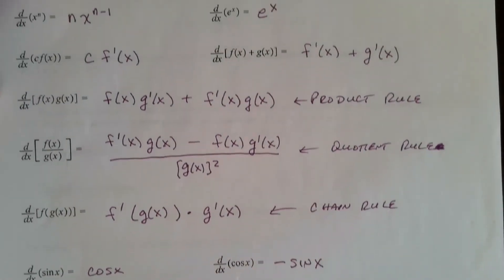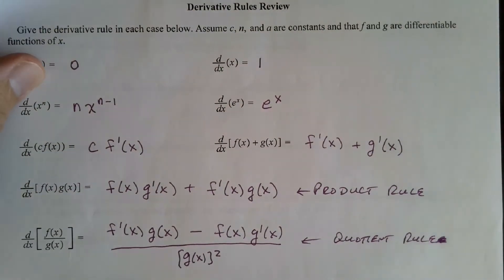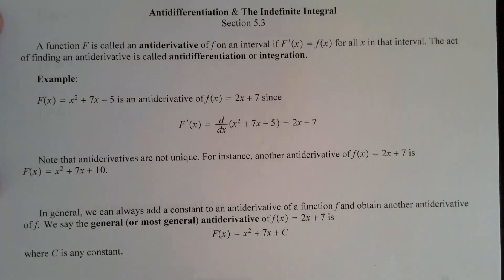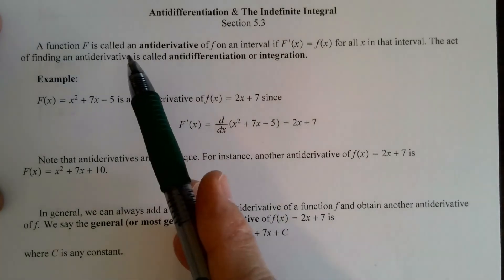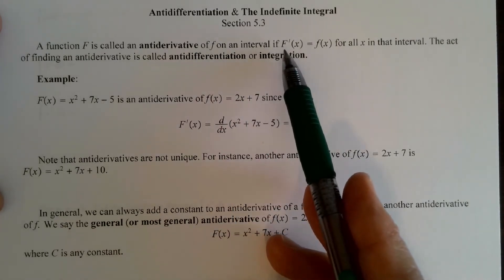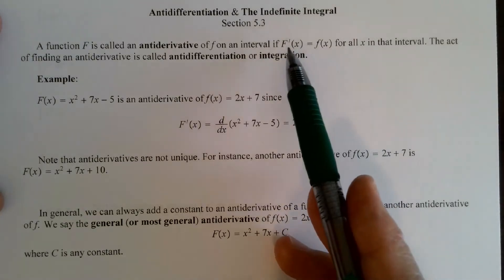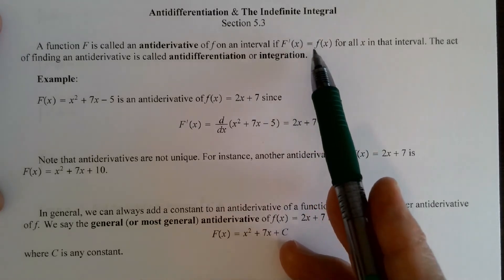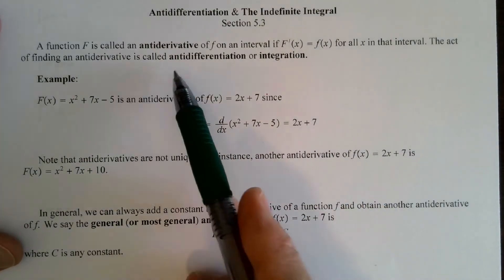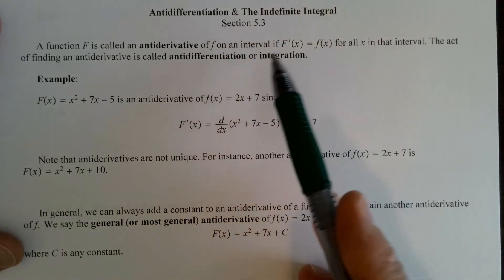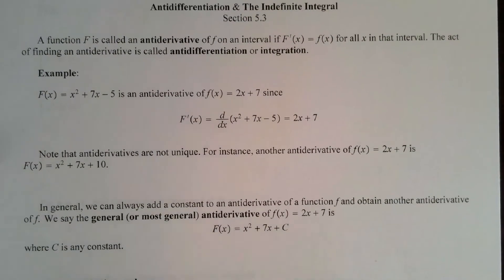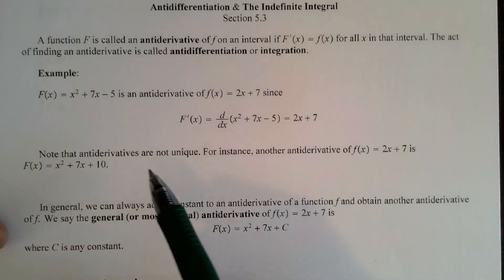Please review these and be prepared to use them. A function capital F is called an anti-derivative of the function little f on an interval if the derivative of capital F is little f. So we're going backwards: previously I was giving you the function and asking for its derivative; now I'm going to give you the derivative and ask for its function. The act of finding an anti-derivative is called anti-differentiation or integration.